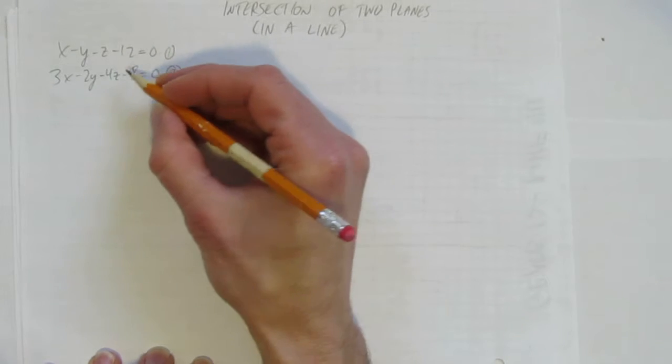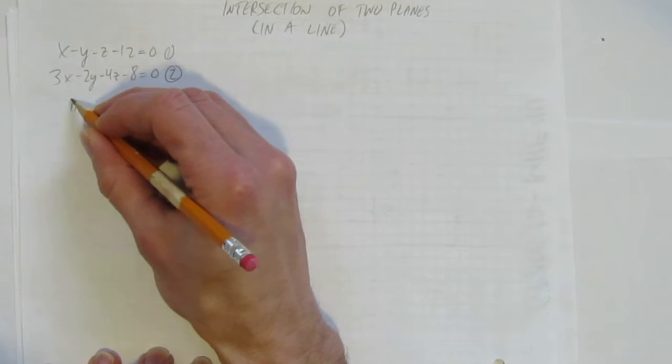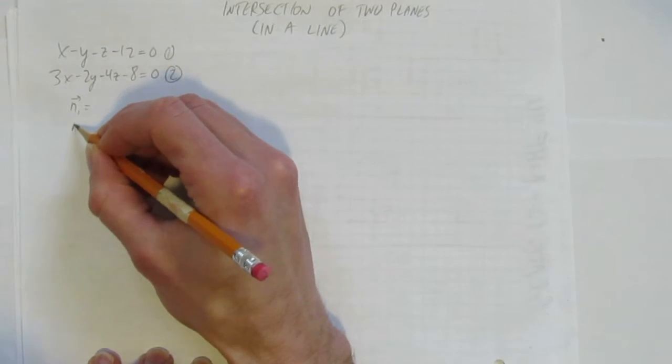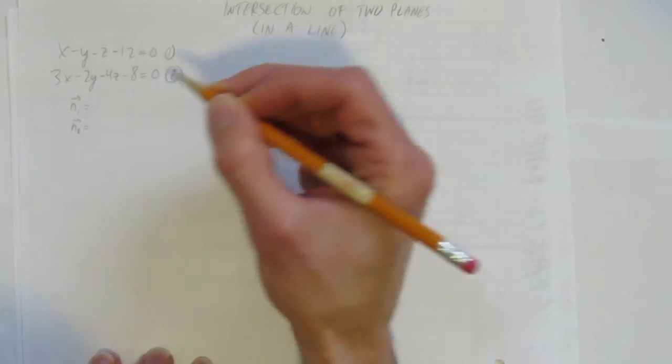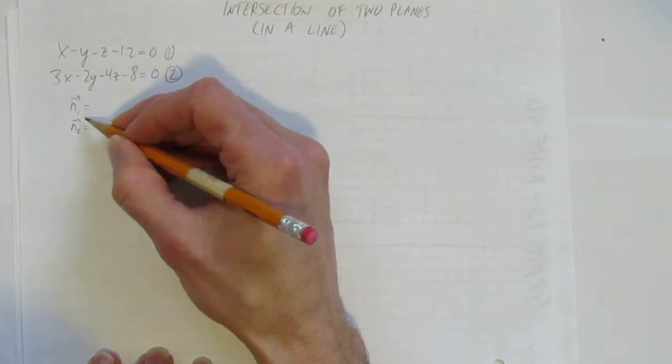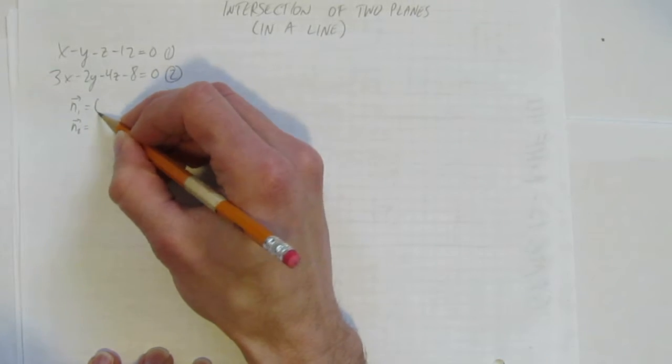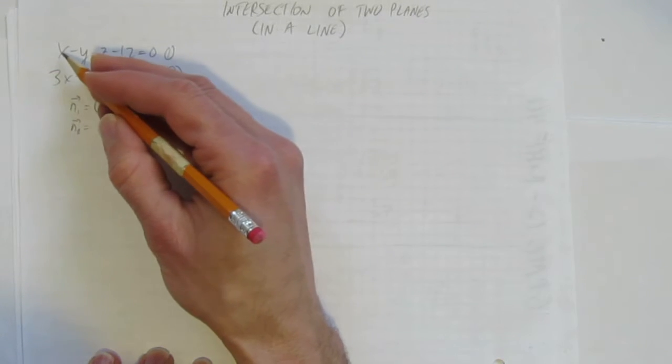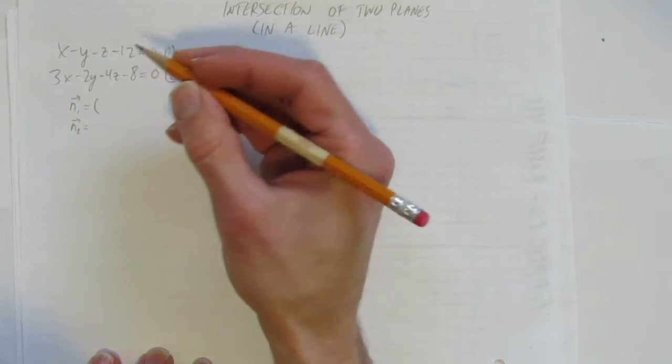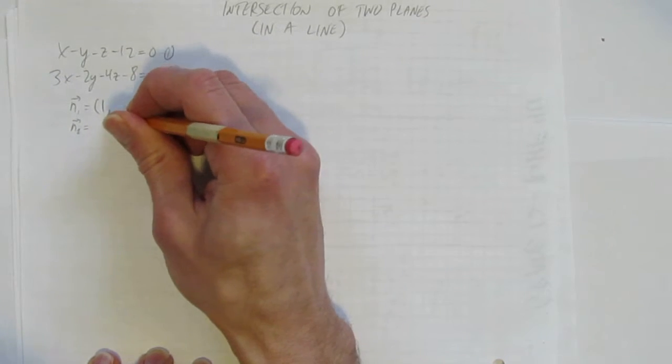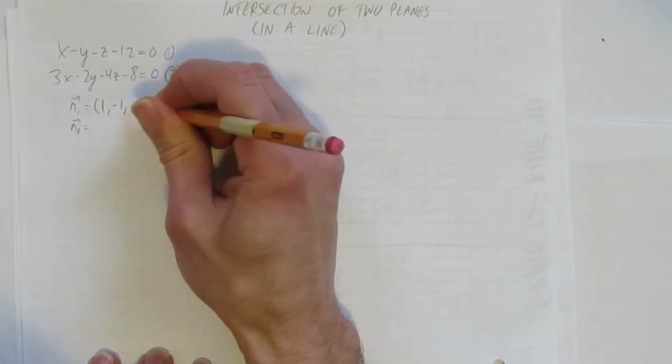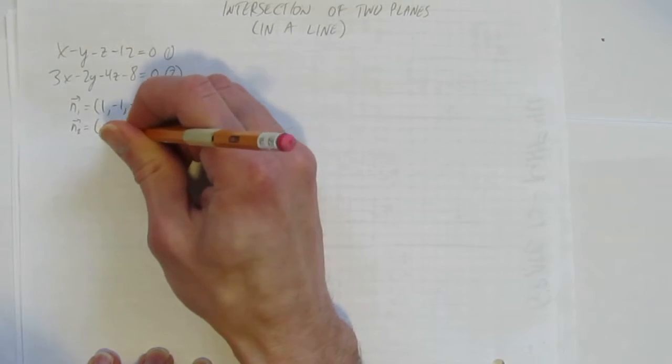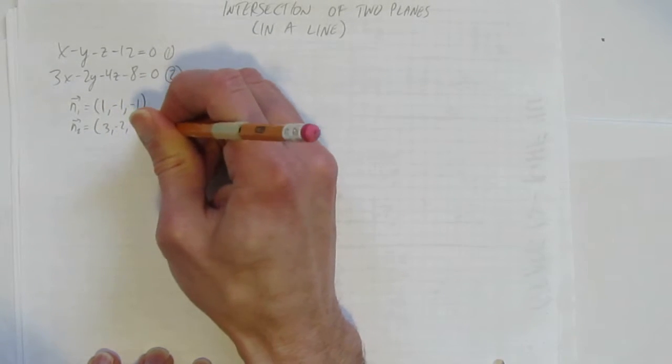First thing to do, check their normal vectors. We want to see what their normal vectors are to see if the planes are parallel. If they're parallel, they're not going to meet. And they'll be parallel if these normal vectors are multiples of each other. You get the normal vectors just by looking at the coefficients of the x, y, and z. So the coefficients are 1, negative 1, and negative 1. And 3, negative 2, and negative 4.